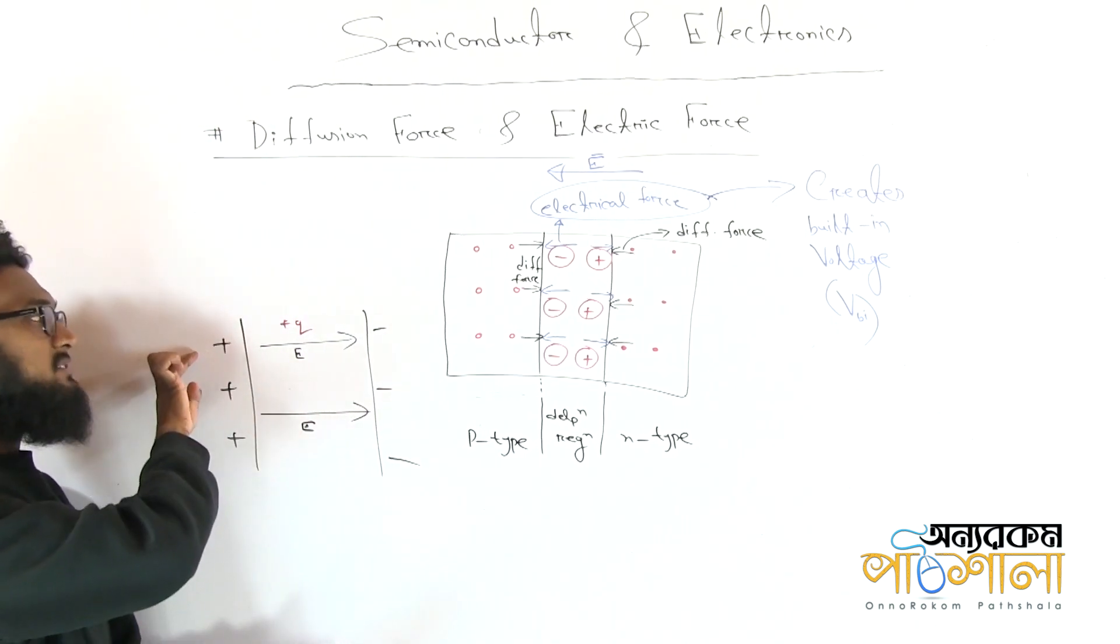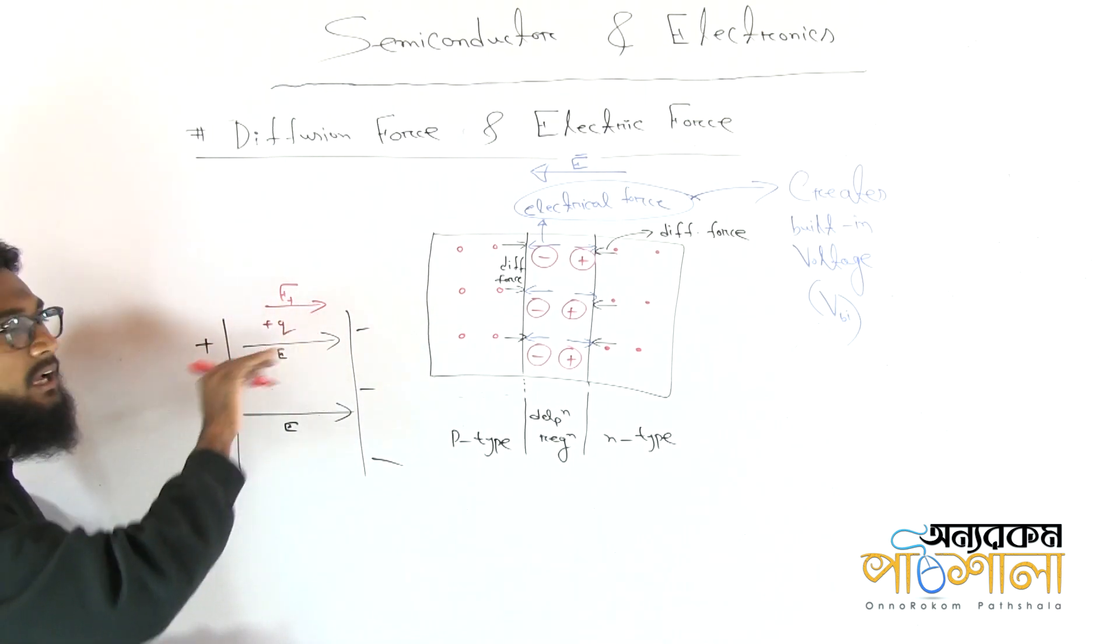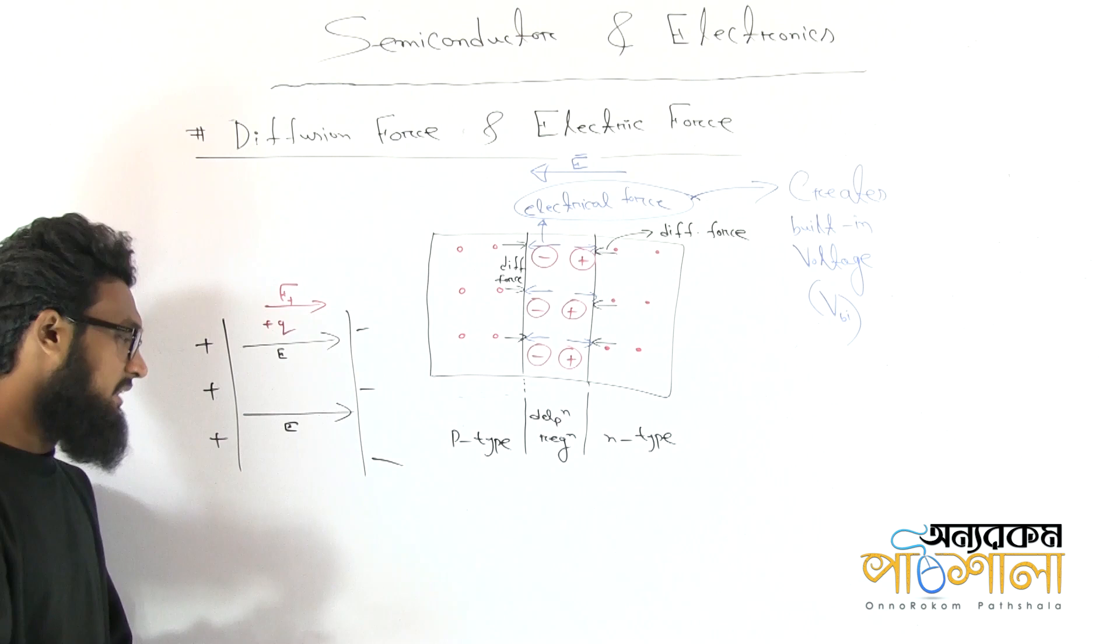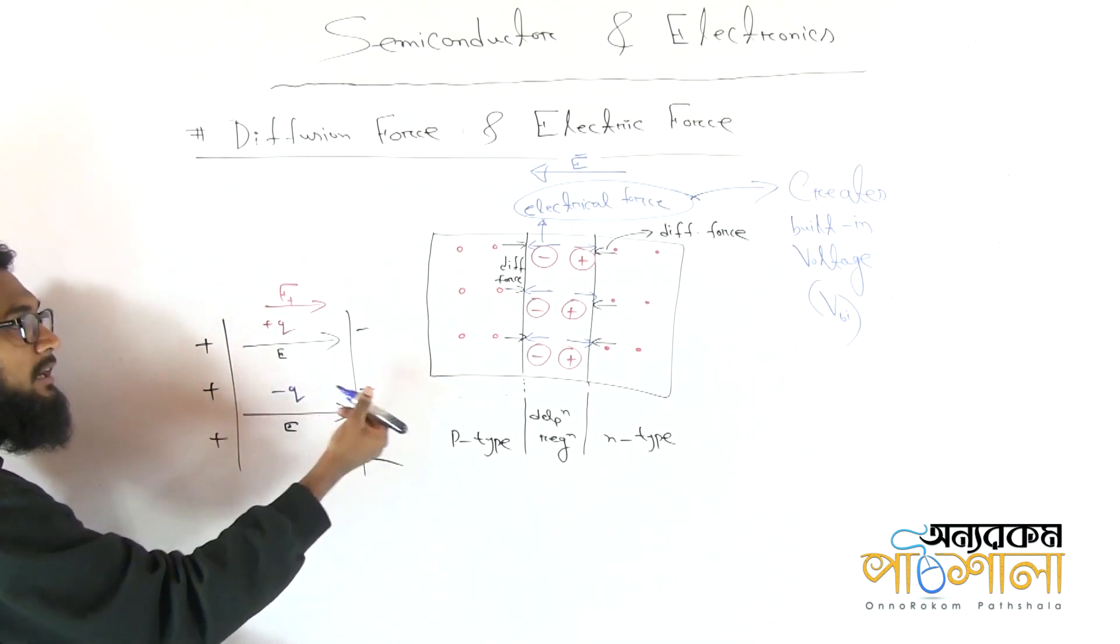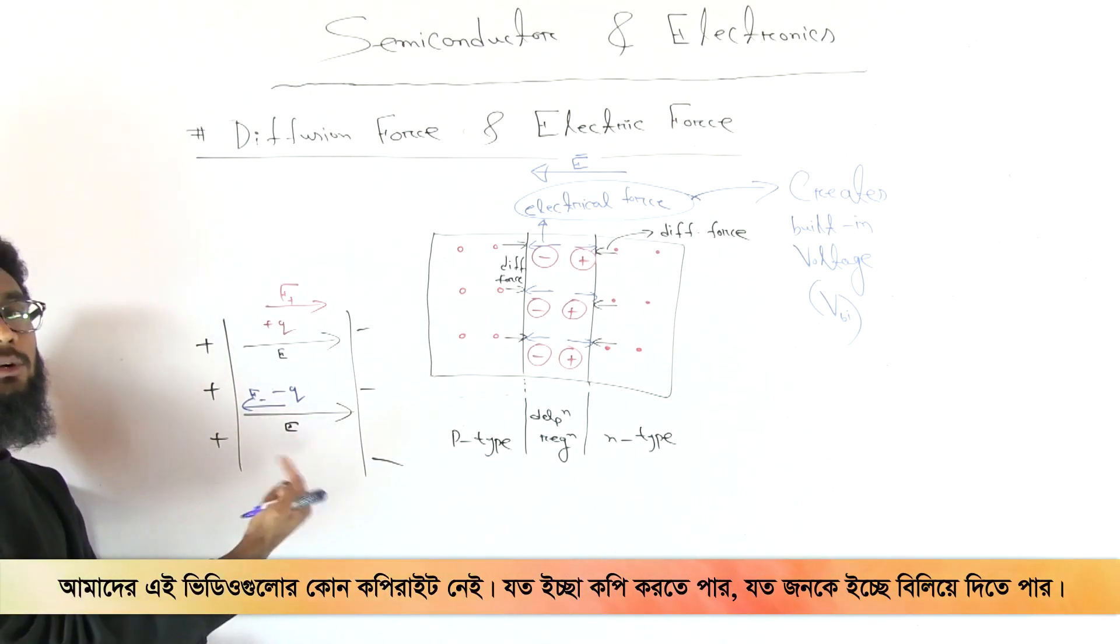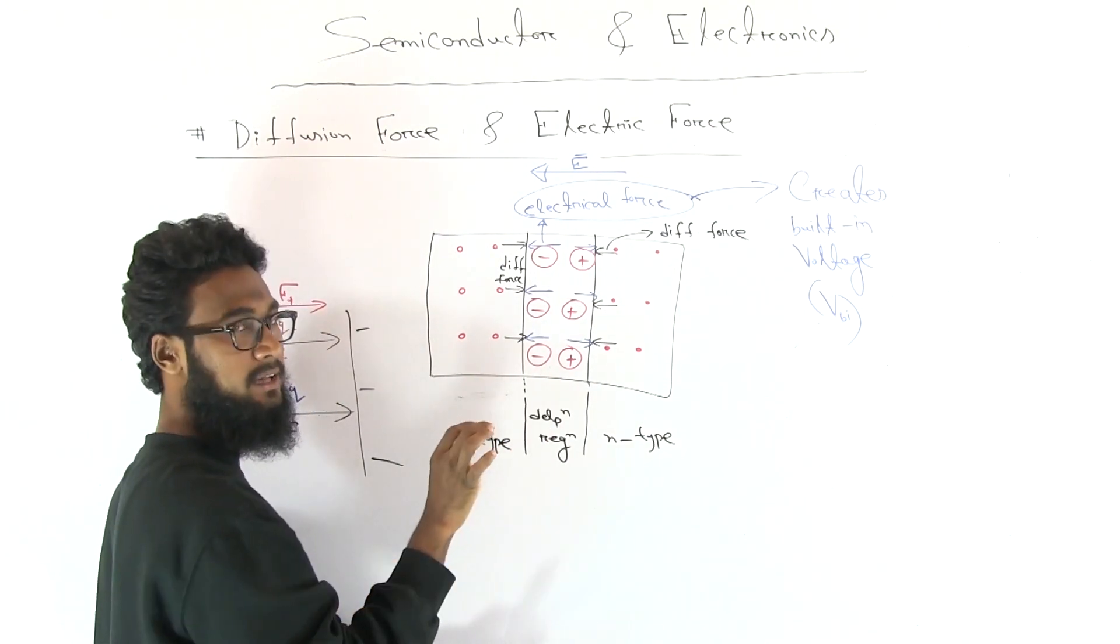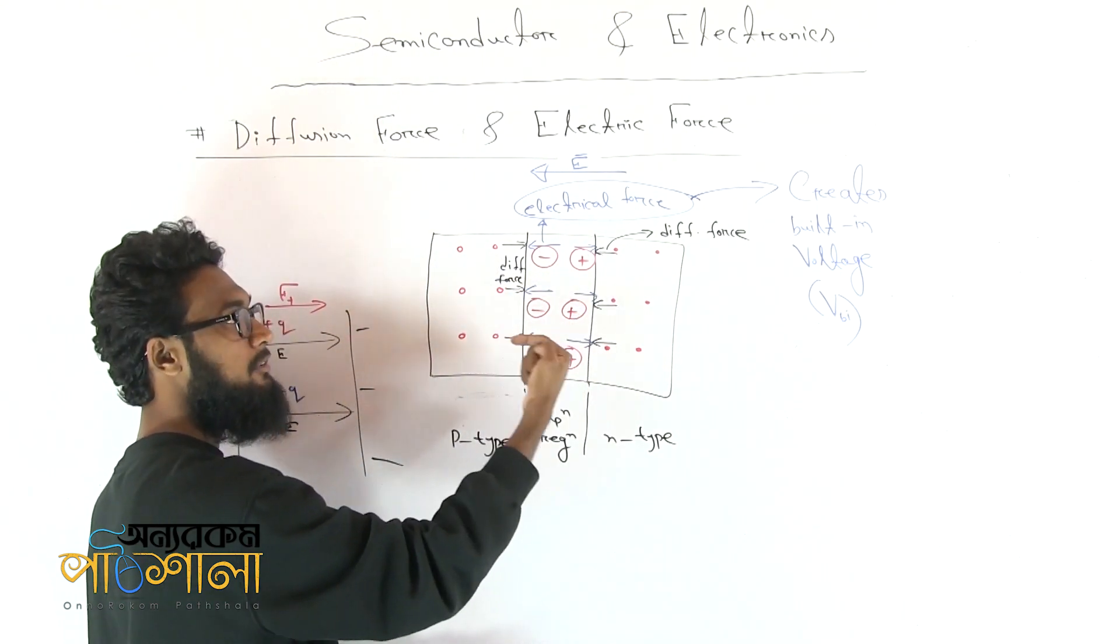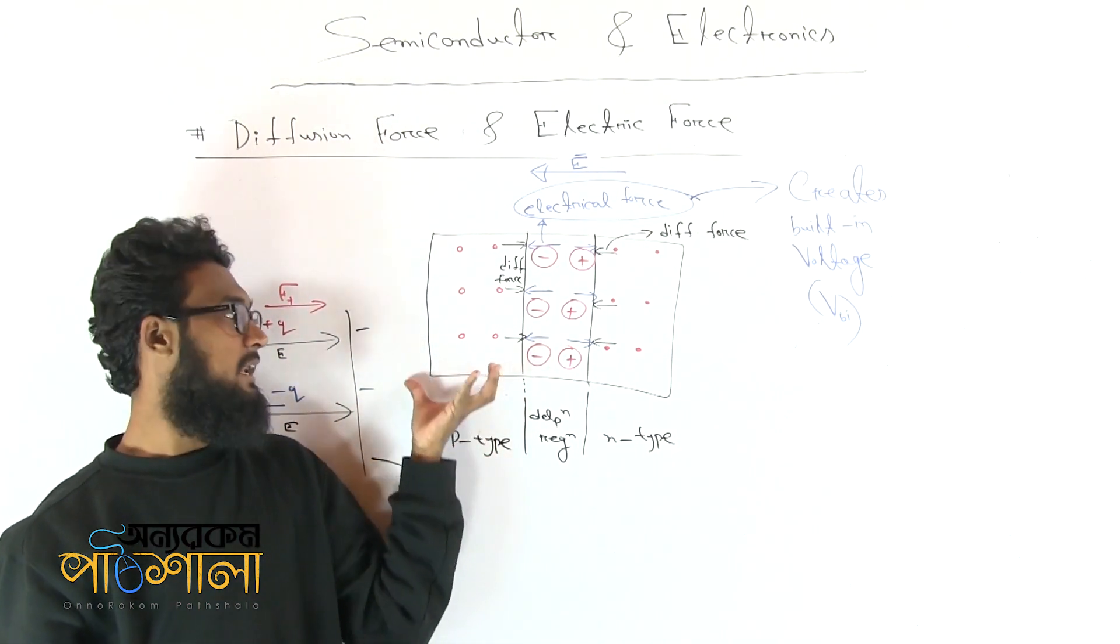This is what we have done. A plus charge to check the minus charge. The minus charge is equal to the minus charge, and the electric field exists because of the electric field. The whole area of electric field and the whole area of electric force and diffusion force are the same.